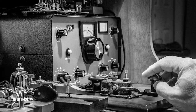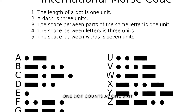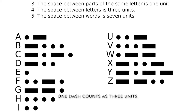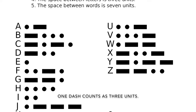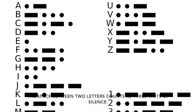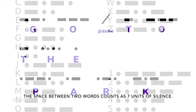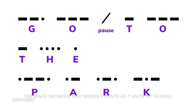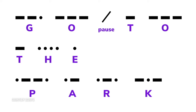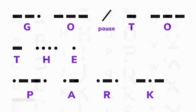Morse code consists of dots and dashes. It runs on a rhythm where one dot counts as one unit, one dash counts as three units, the space between two letters counts as three units worth of silence, and the space between two words counts as seven units worth of silence. This rhythmic structure helps listeners to distinguish between letters, words, and sentences when the only tools of expression are a dot and a dash.